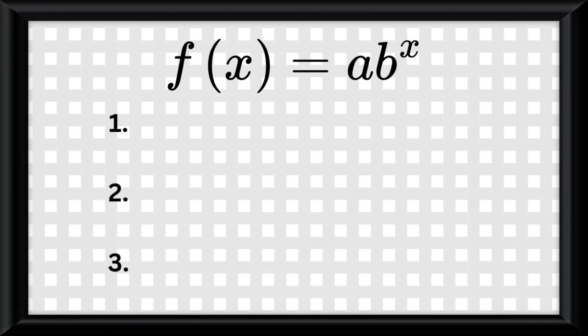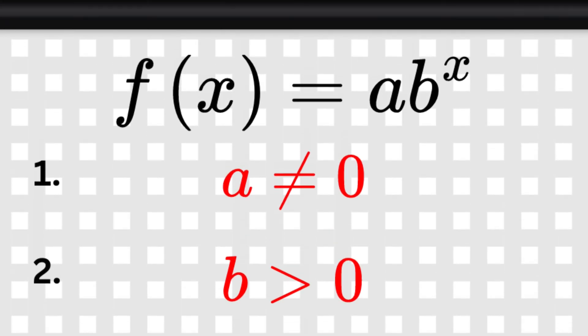There are three simple rules of an exponential function. First is that a can never equal zero. The second is that b must always be positive. And finally, b can never be 1. Other than those three things, you can do really whatever you'd like with the function.